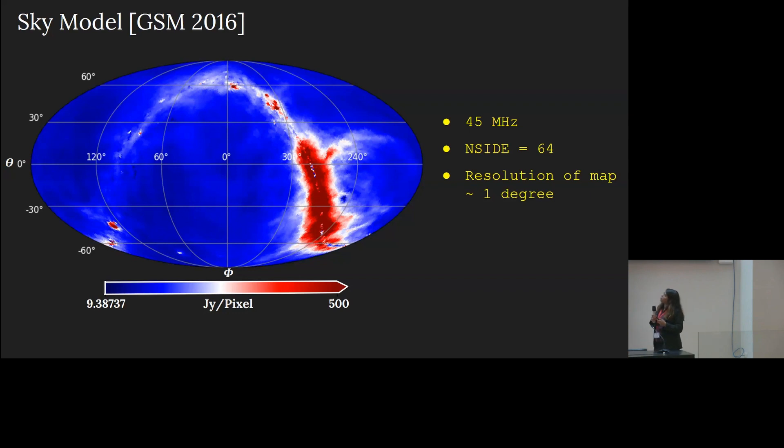What we try to do is to understand how this might impact... Because we need to remember that the signal that we are trying to detect is hidden beneath this foreground. And the large part of the actual signal that we receive is contributed by this foreground. So, it is very essential to effectively model the foreground and try to understand its impact on the power spectrum estimation.